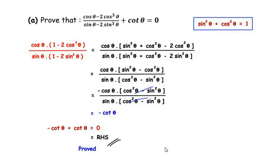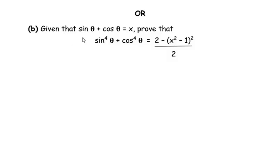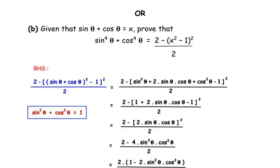Now let us move on to the 'or' question. Given that sin θ + cos θ = x, prove that sin⁴θ + cos⁴θ = (2 − (x² − 1)²) / 2. Here we have been given x = sin θ + cos θ, so let us begin by solving the right hand side first.